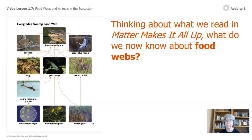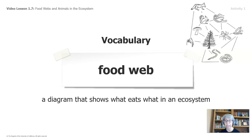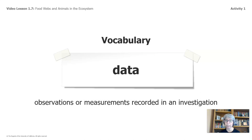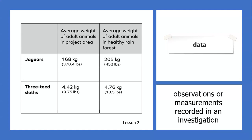Thinking about what we read and matter makes it all up — what do we know about food webs? A food web is a diagram that shows what eats what in an ecosystem. And while we're looking at words, let's take a look at the word data. We've been using lots of data for this chapter. Data is observations or measurements recorded in an investigation. In lesson two, we took a look at several data tables.